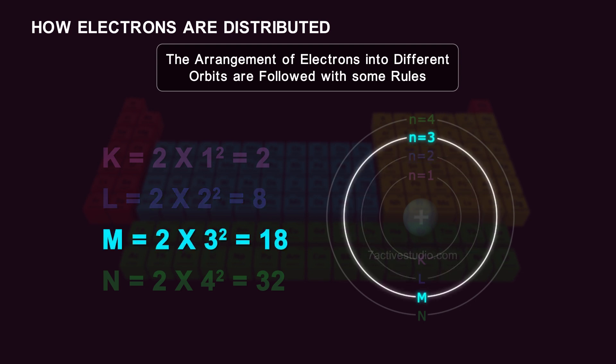The third orbit 3 or M shell can accommodate 18 electrons as per 2n square. 2 multiplies 3 square is equal to 2 into 9 is equal to 18.